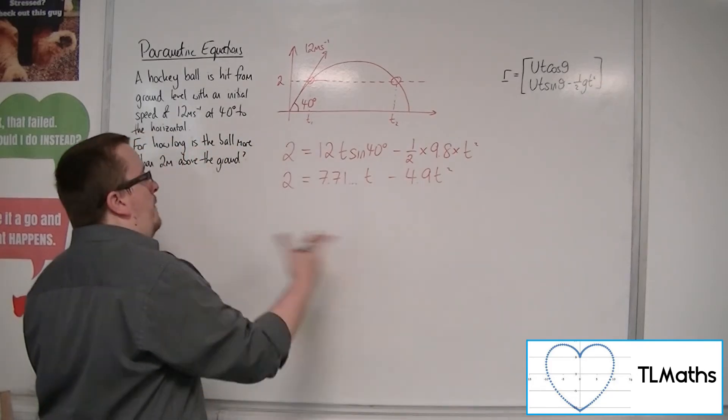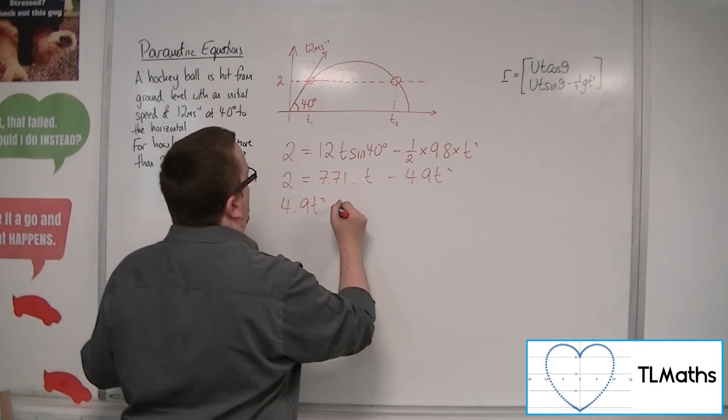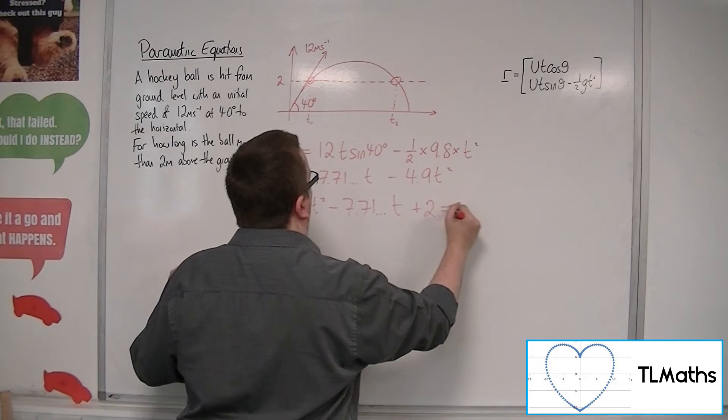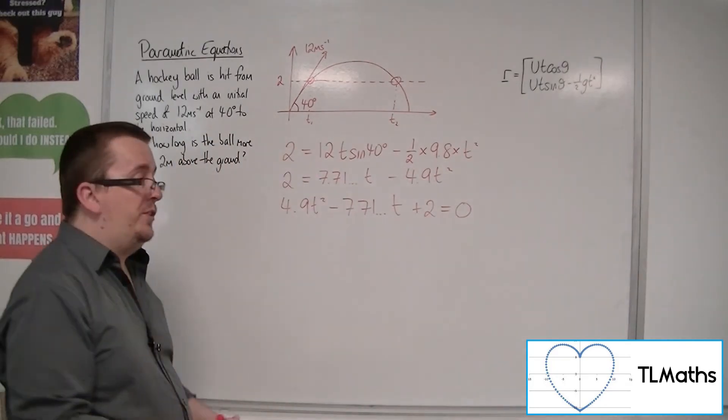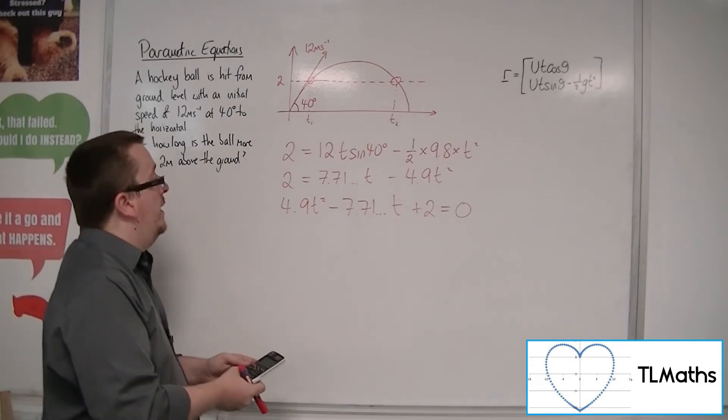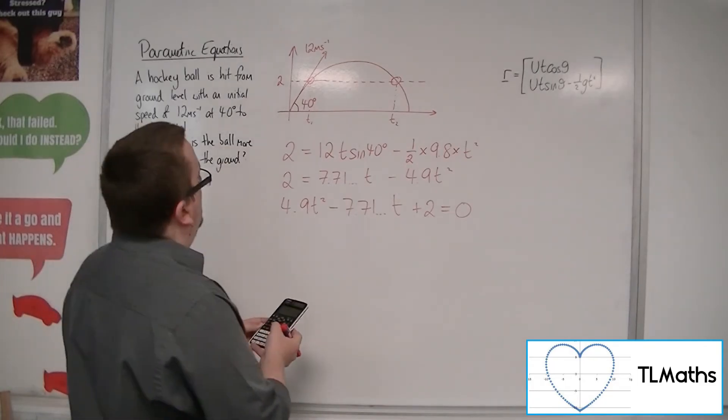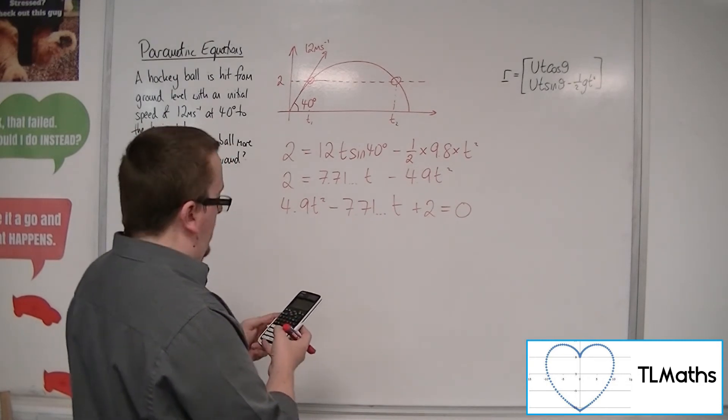So if we throw everything onto the left-hand side of the equation, 4.9 t squared, take away 7.71 t plus 2 equals 0. So now using the quadratic formula or substituting it into your quadratic solve on your calculator, 4.9 minus 12 times sine of 40 and 2.